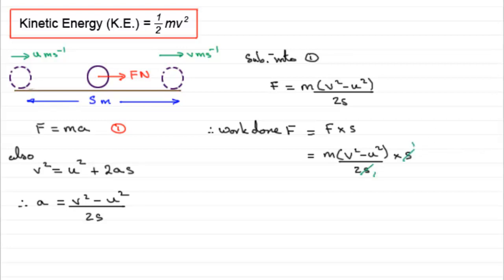So what we end up with equals a half mv squared. If we divide each term by the 2, we end up with a half mv squared minus a half mu squared.